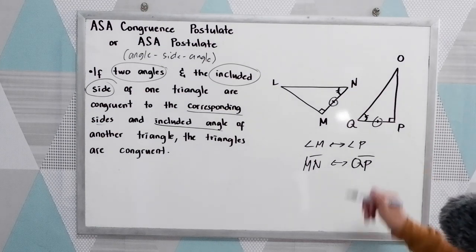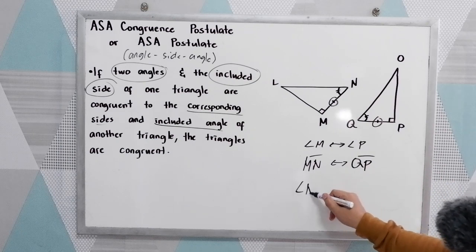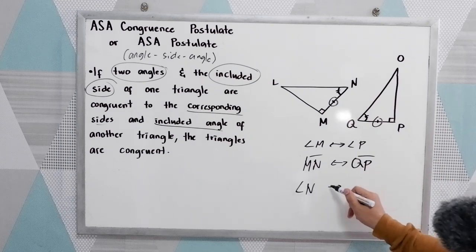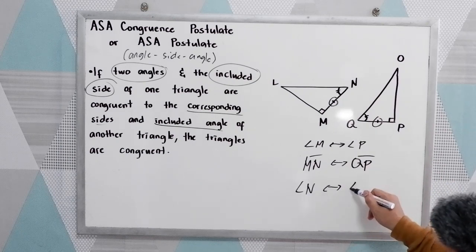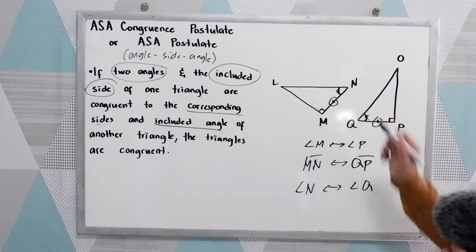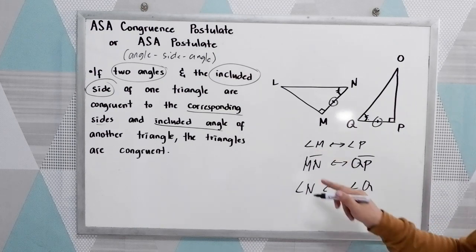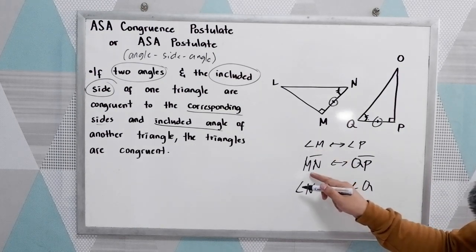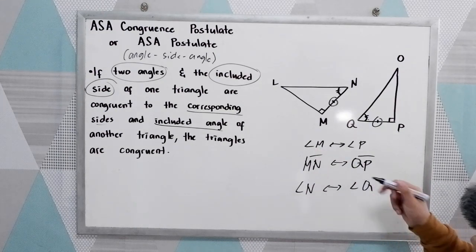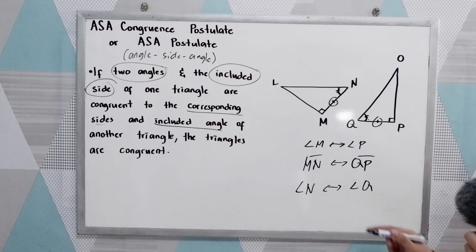And for the angle, angle N corresponds to angle Q. So we have the angle, the included side, and the angle — completing our ASA components.